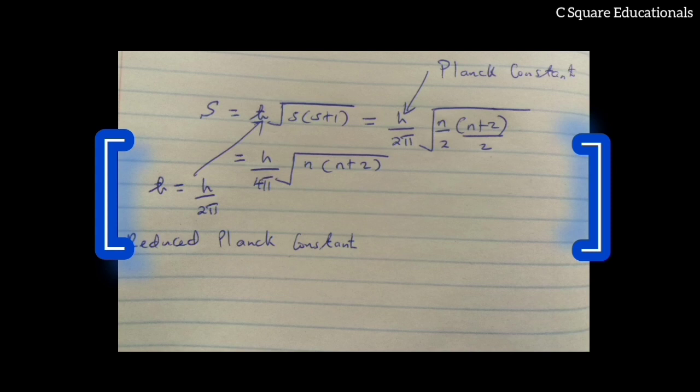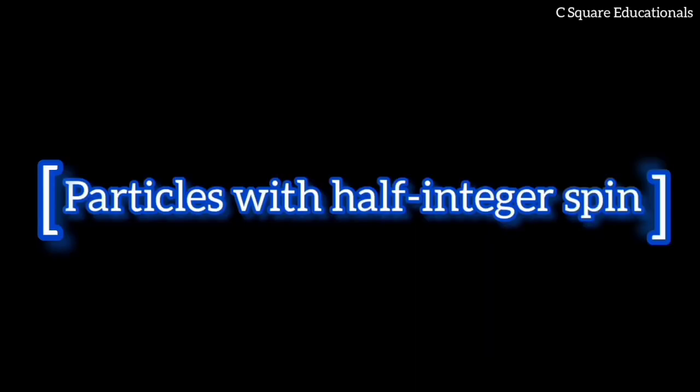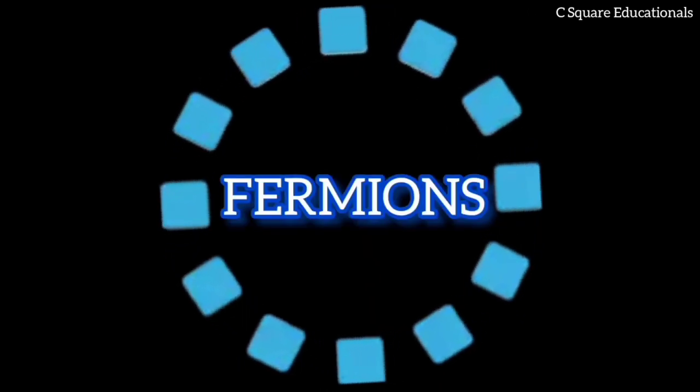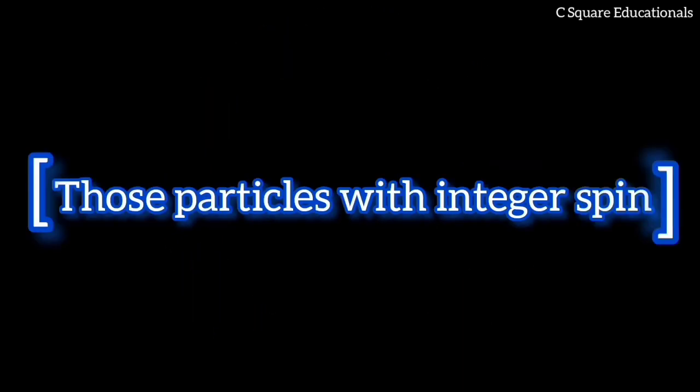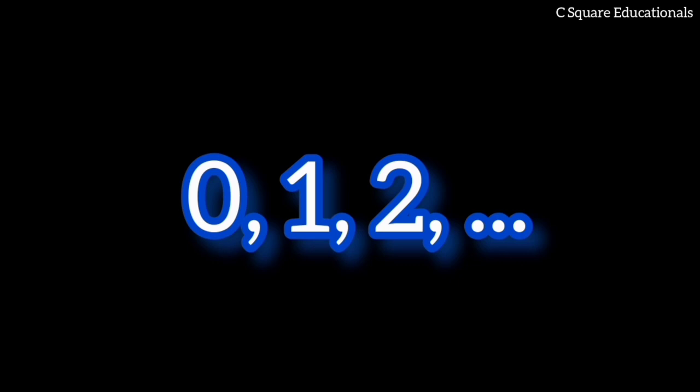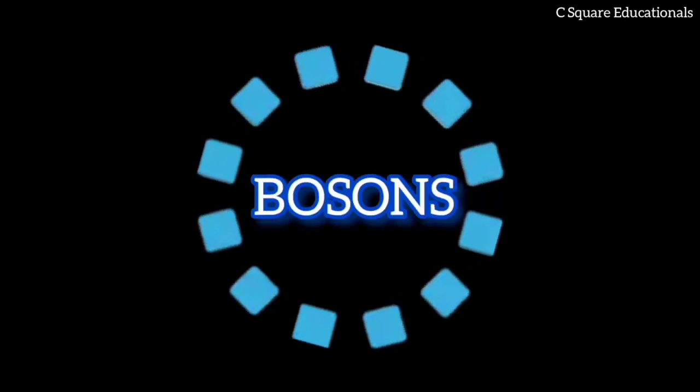In contrast, orbital angular momentum can only take on integer values of S, that is, even numbered values of N. Those particles with half-integer spins, such as 1/2, 3/2, 5/2, are known as fermions, while those particles with integer spins such as 0, 1, 2 are known as bosons.